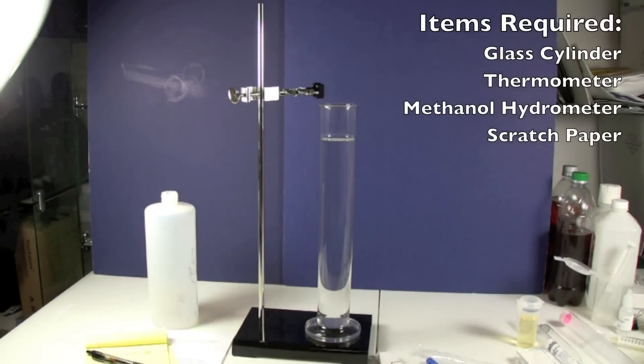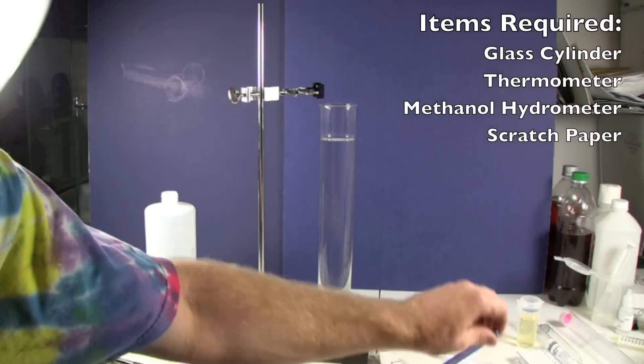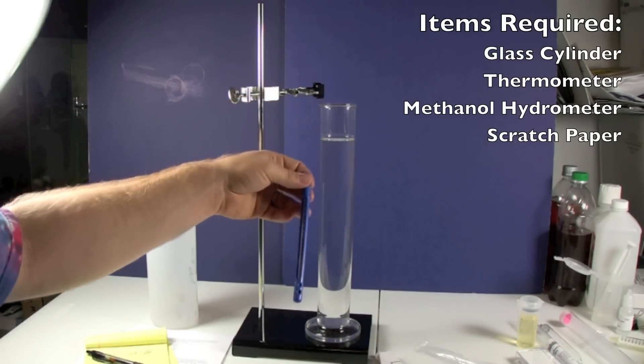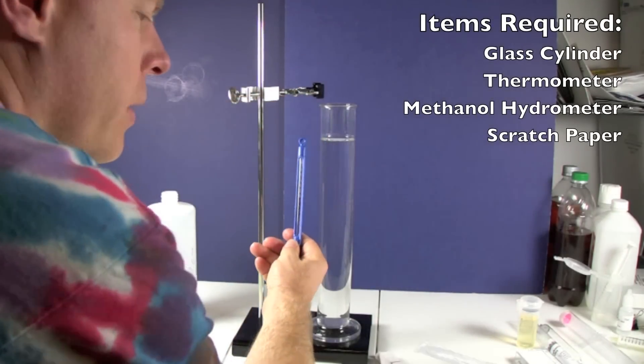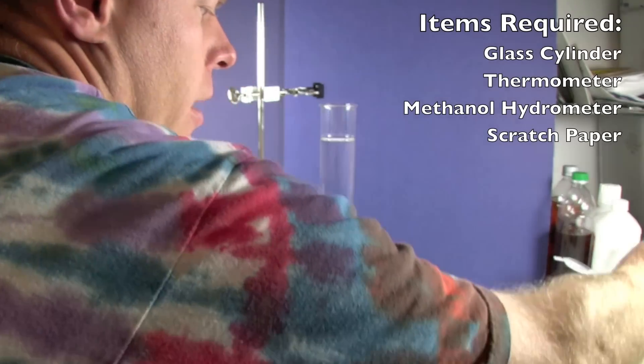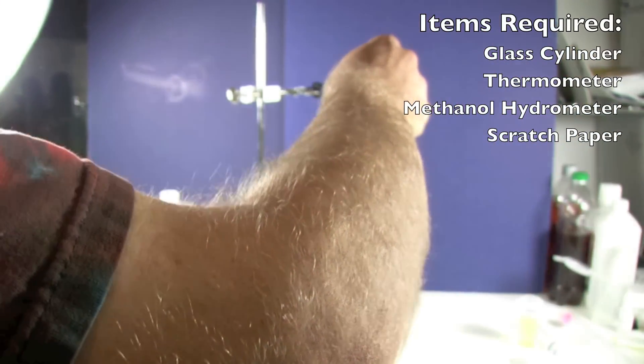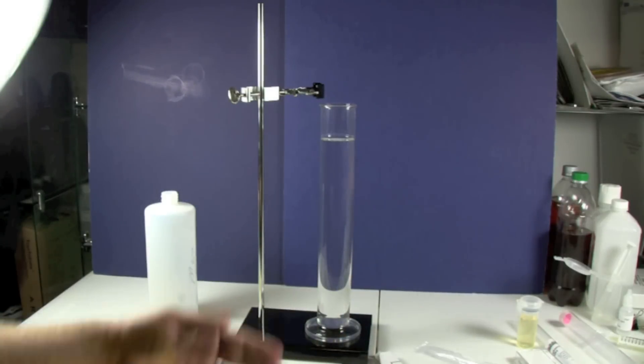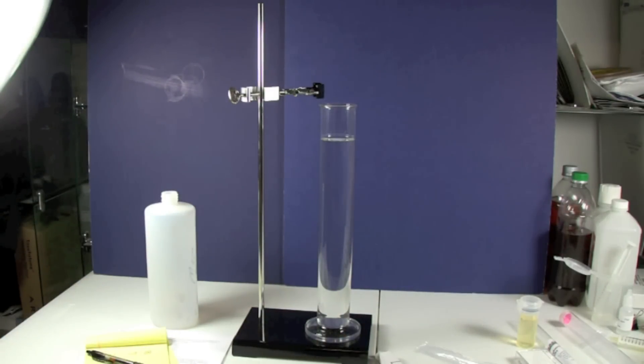To do this, you'll need a cylinder to put some methanol in, a thermometer that's accurate down to one degree. You'll need a hydrometer specifically for measuring methanol, which this one is. And then we've got this handy stand that allows us to put a thermometer in here and measure this.